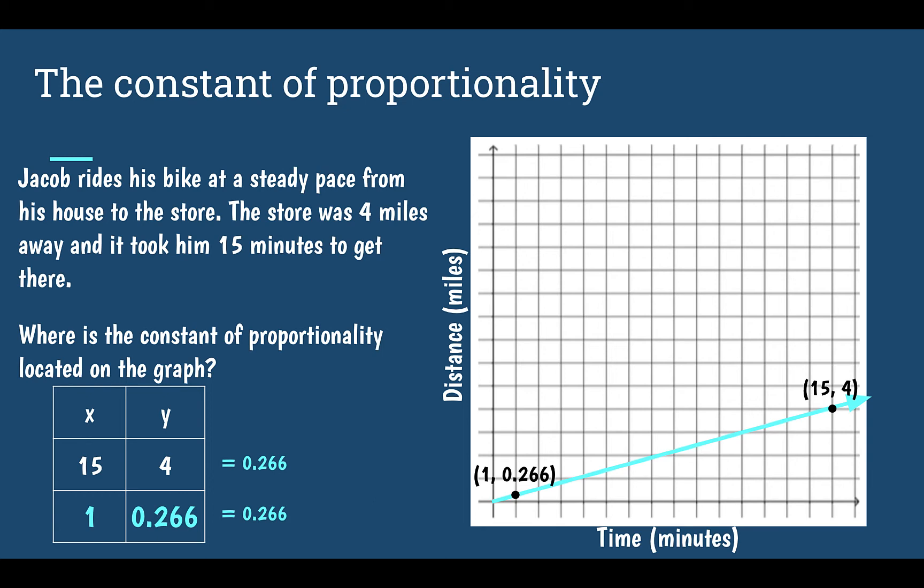So on our graph, we would go 1 over, up however many we need to to get to the line. That value is your constant of proportionality. If it's complicated like it is in this situation, 0.266, you're not going to be able to guess that. Use the points that you know, such as 15 and 4. You'll get the same answer regardless.